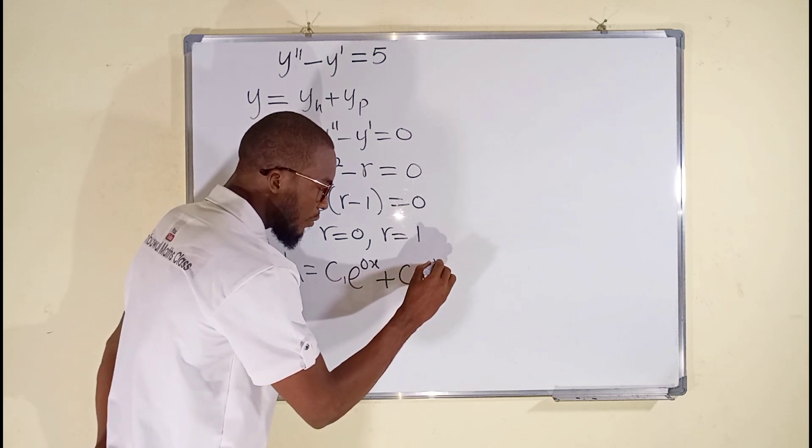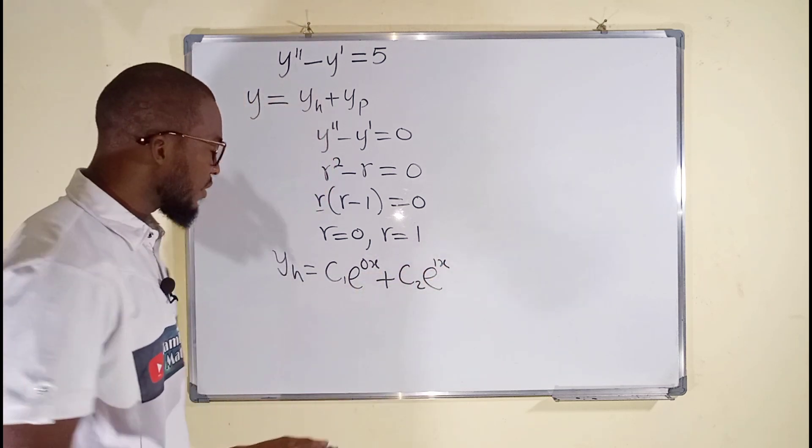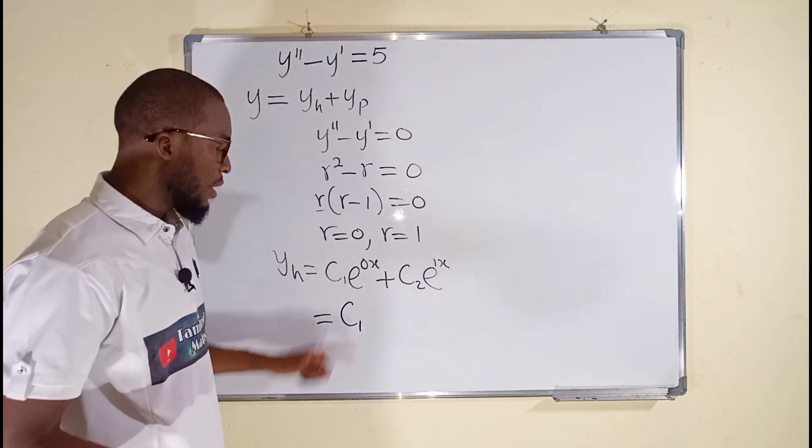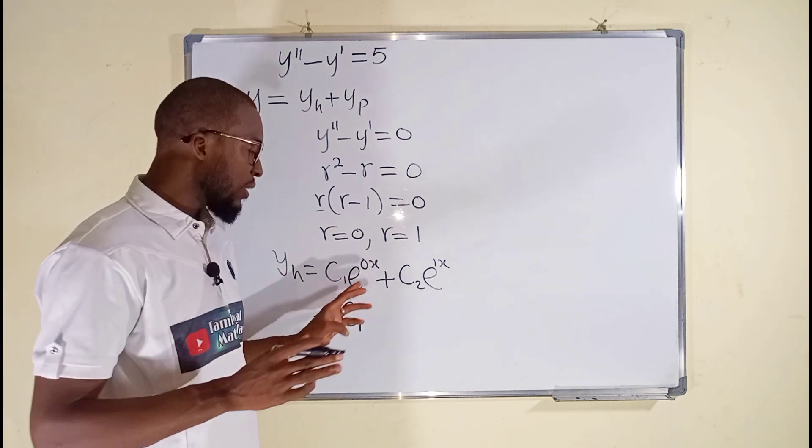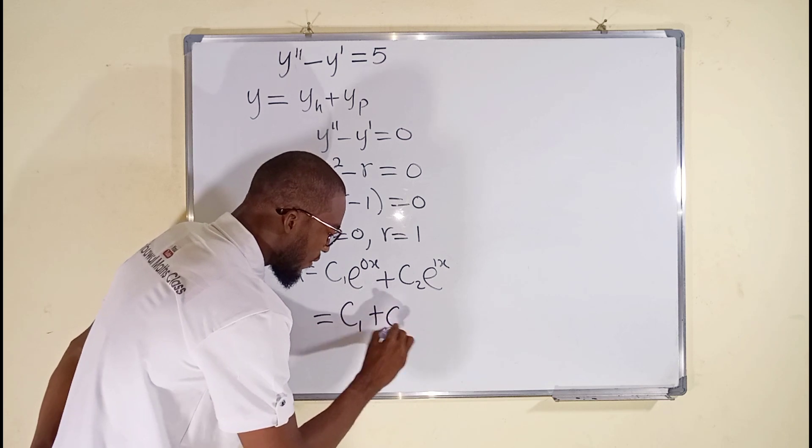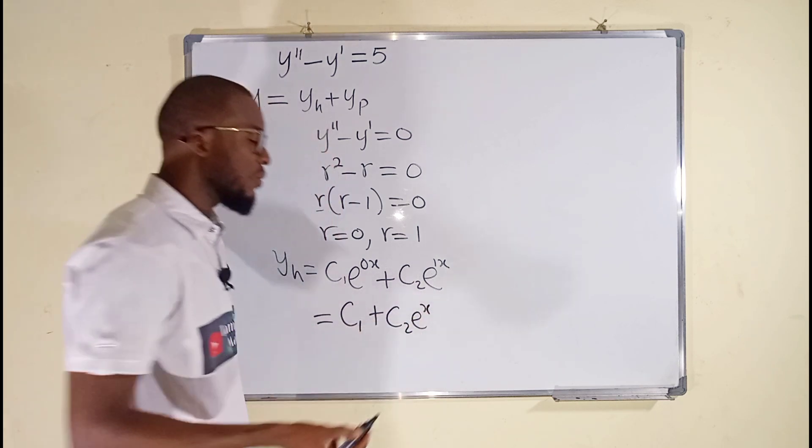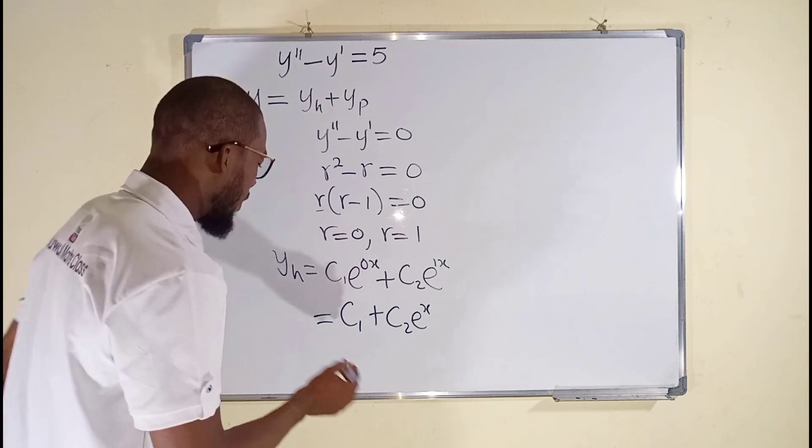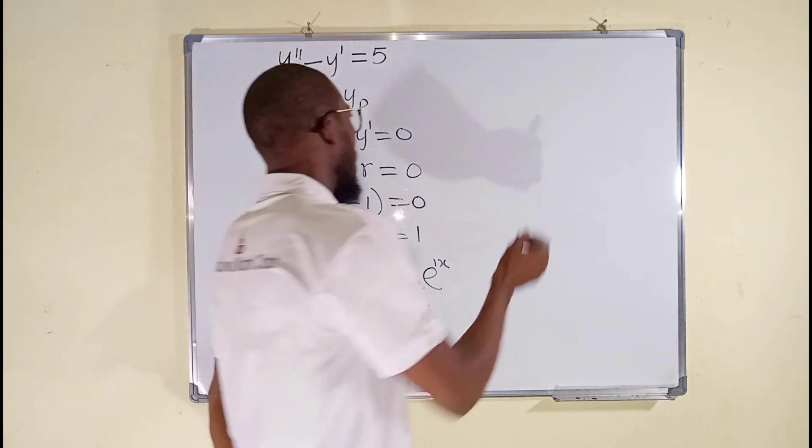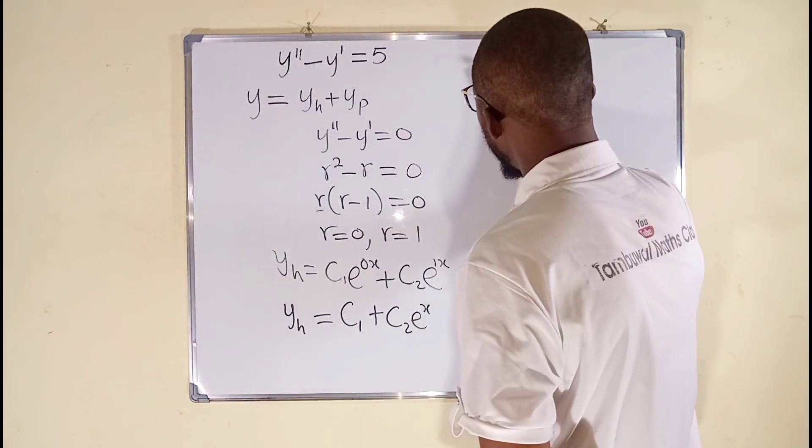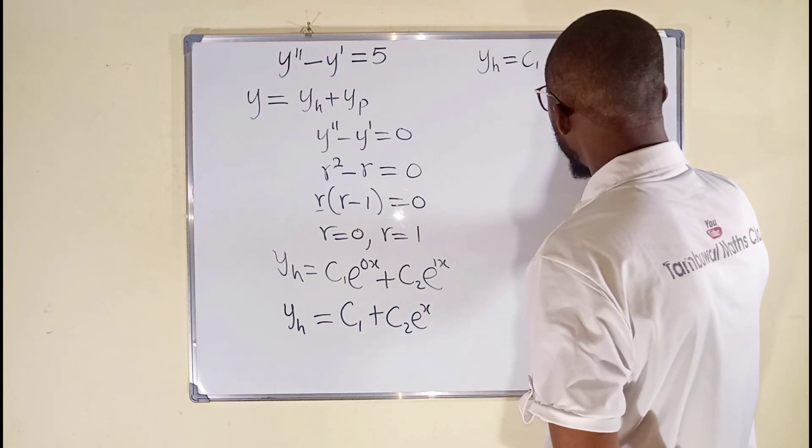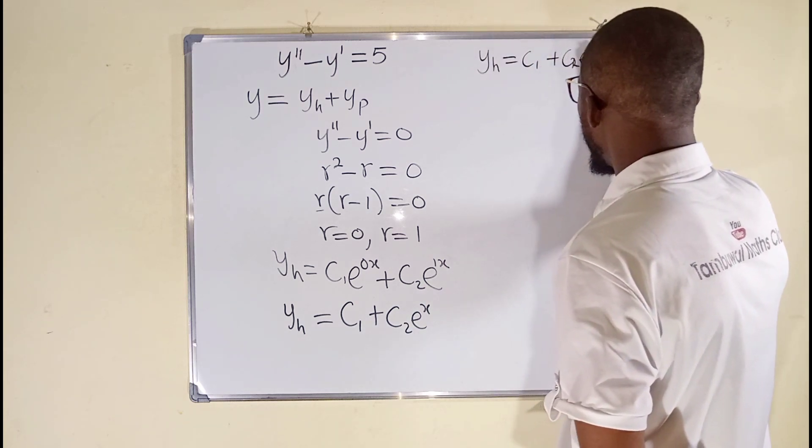Let us further simplify. We have c1, e to the second root x is still 0 and e to the second root 0 is 1. So we have c2, e to the second root x because 1 multiplied by x is still x. So this is the general solution for our homogeneous differential equation and we can keep it aside. We have y sub h equals a constant plus another constant c2, e to the power of x.